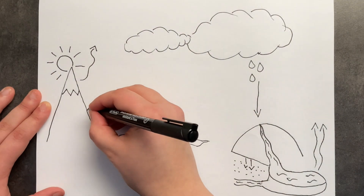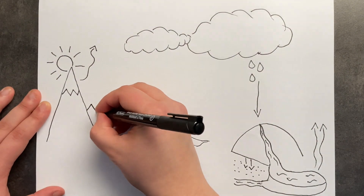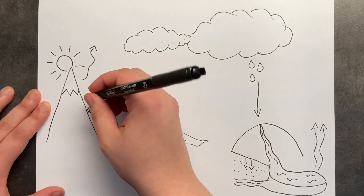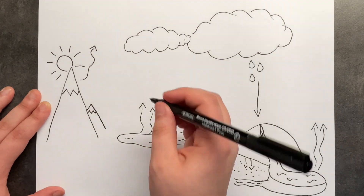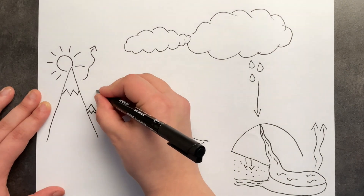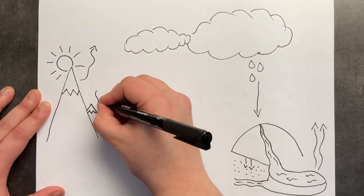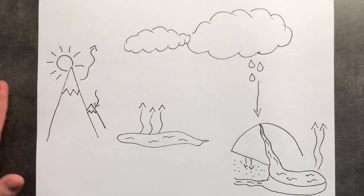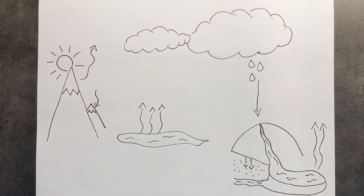And then if it's very, very cold, the water vapour or steam in the air can turn straight into ice without being water first. So from gas straight into solid — and this is called deposition. So this is the opposite of sublimation.